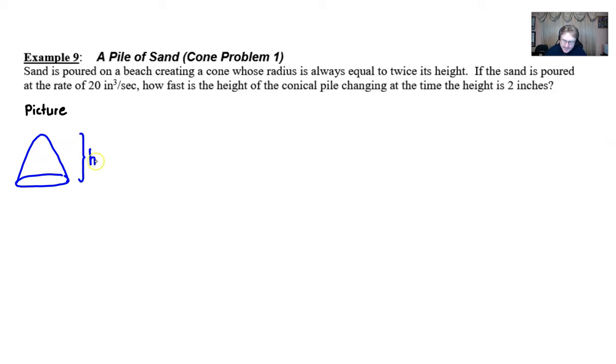When the sand is poured and it makes that shape, we create a height and the height is changing. That height is certainly getting bigger as you can tell, and the radius is likely changing as well. The question is how fast is the height of the cone changing at the moment that it's two inches high?